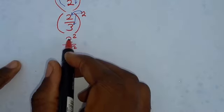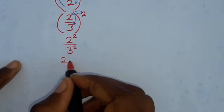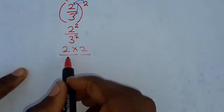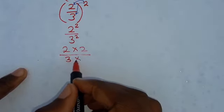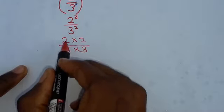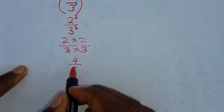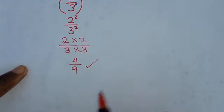Then this means we are going to have 2 to the power 2 is same as 2 times 2, then over 3 squared is same as 3 times 3. Then 2 times 2 is 4, 3 times 3 is 9. So this is the answer.